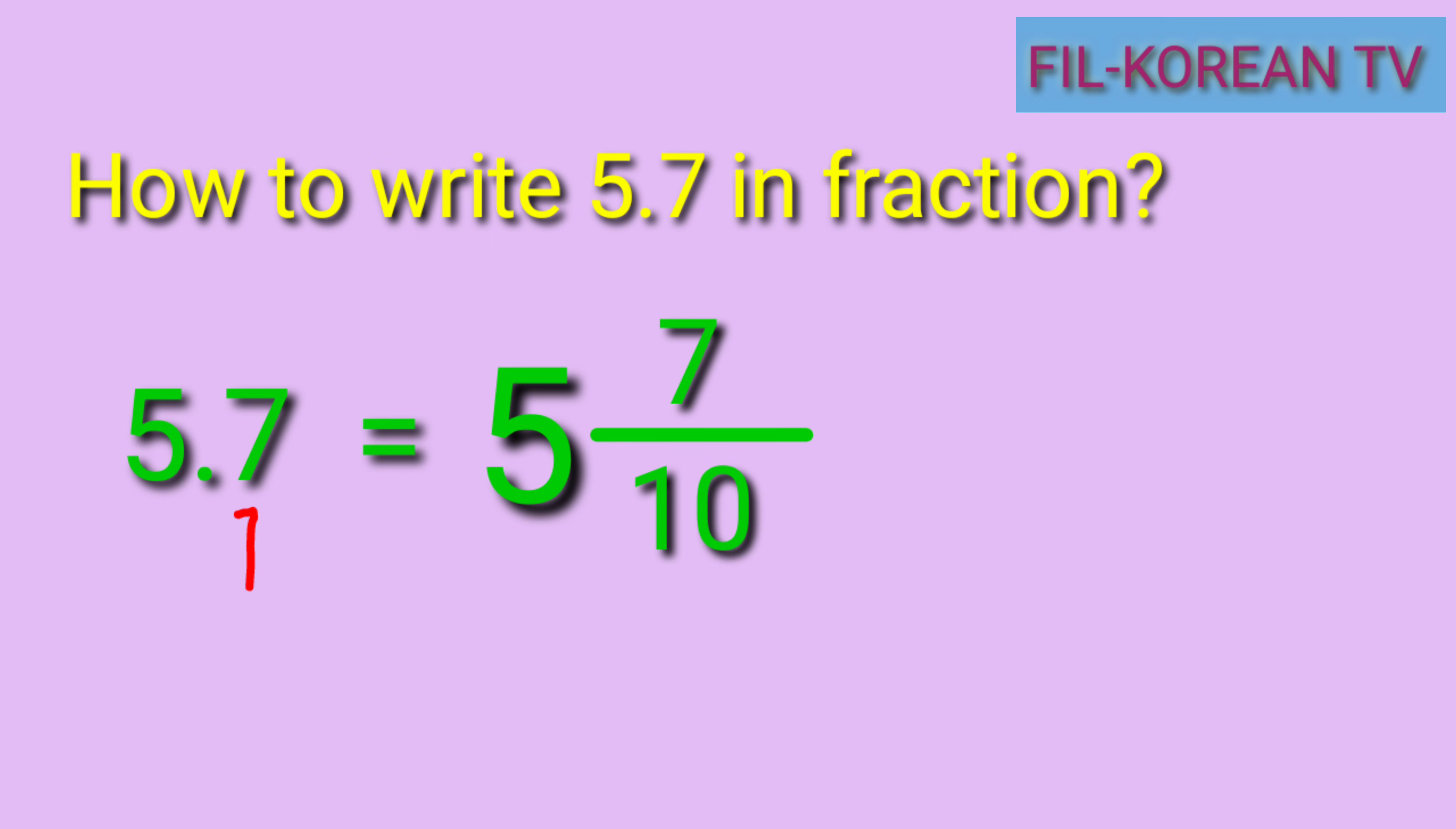As I've said, the number of digits after the decimal point must be equal to the number of zeros in the denominator. The next step is to reduce the fraction to lowest term. But in this case, or in this answer, it is already in lowest term because the numerator 7 and the denominator 10 do not have other common factor aside from 1.